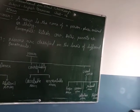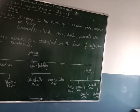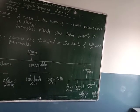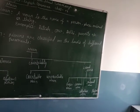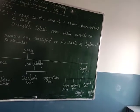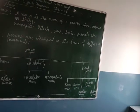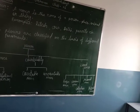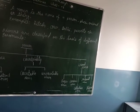Second, common noun: it is the name common for all places, persons, animals, or things of the same kind. Third, collective noun: it is the name of a group of similar things, persons, or animals. For example: team, class, committee, army, etc.